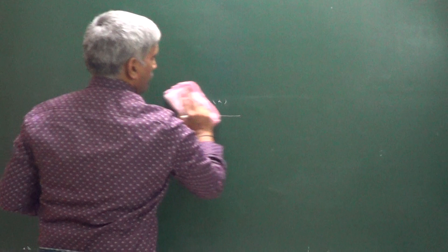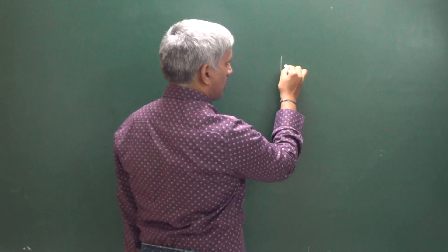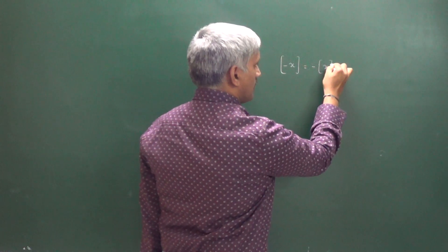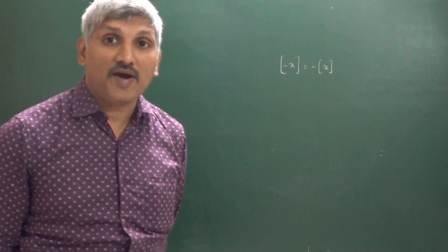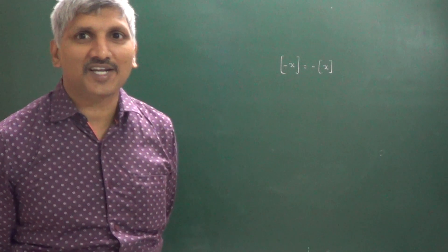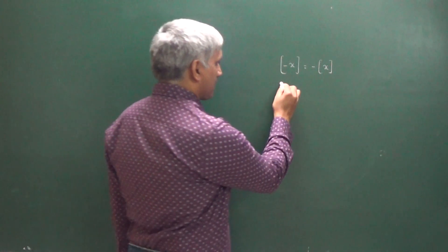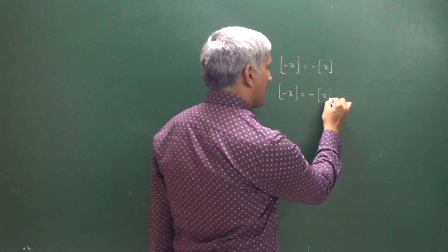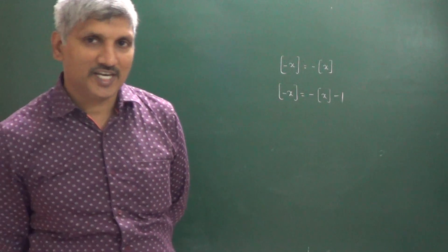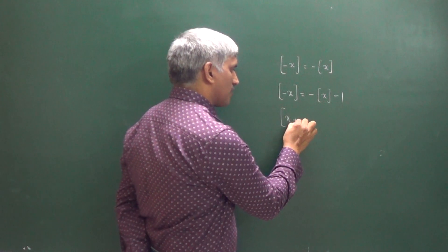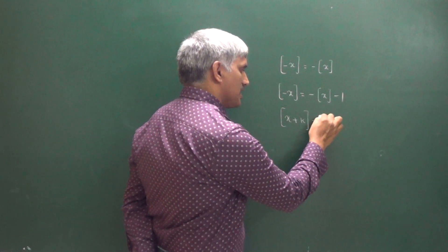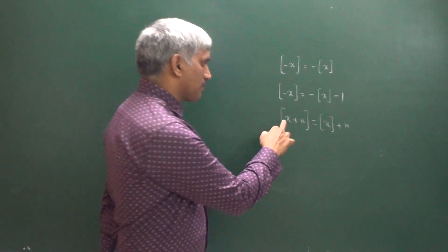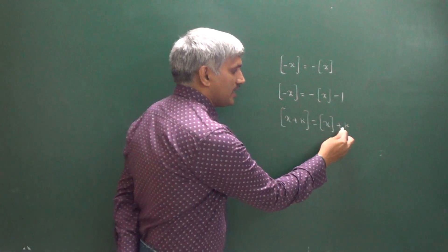The integral part (floor function) of minus x equals minus the integral part of x, when x is an integer. When x is not an integer, the integral part of minus x equals minus the integral part of x minus 1. Also, the integral part of x plus k equals the integral part of x plus k, when k is an integer.